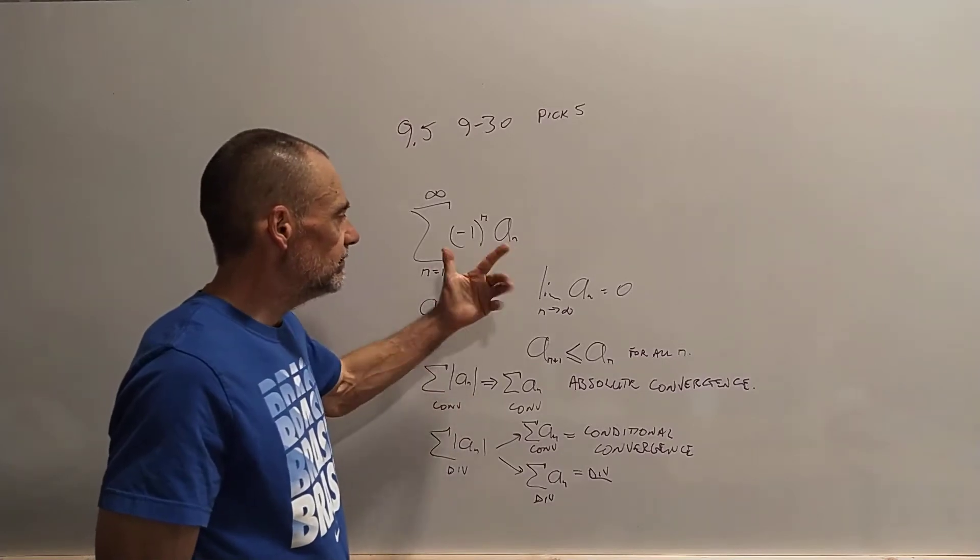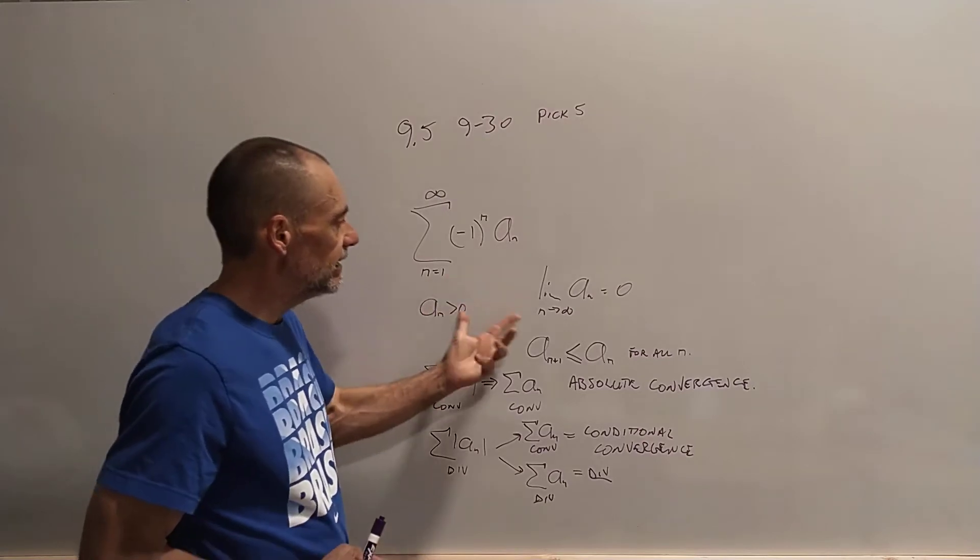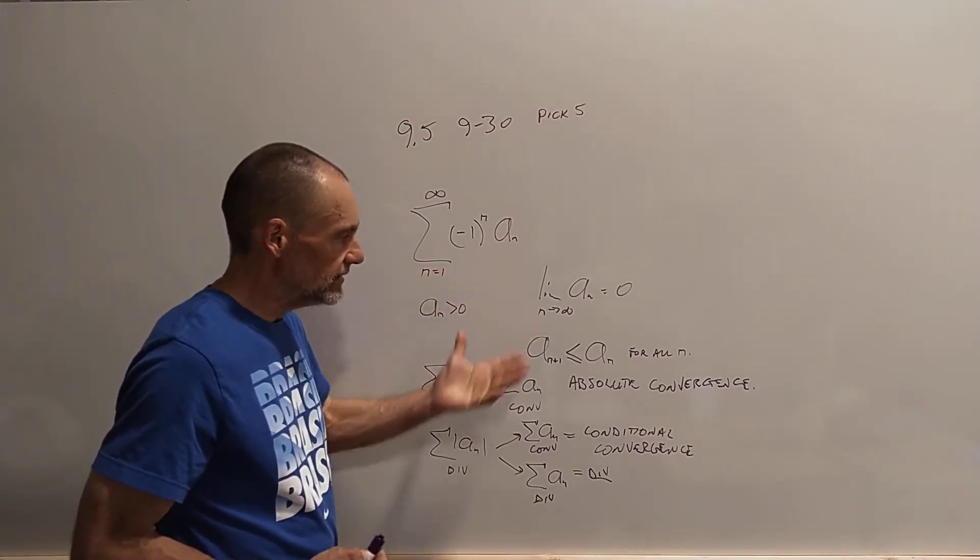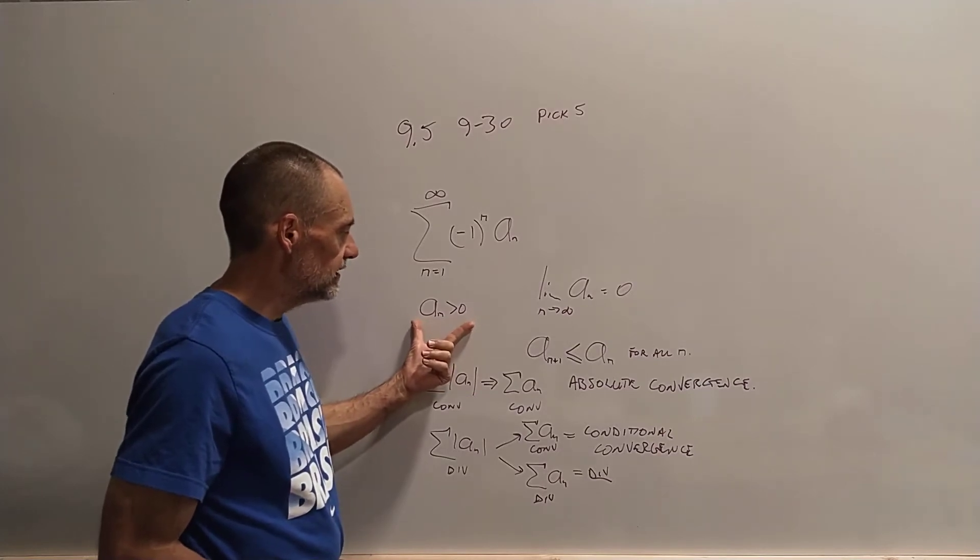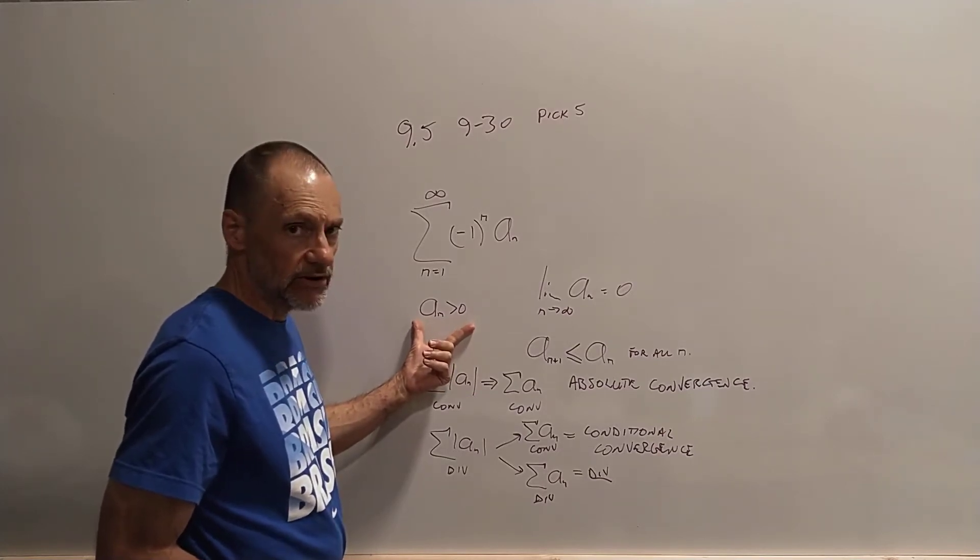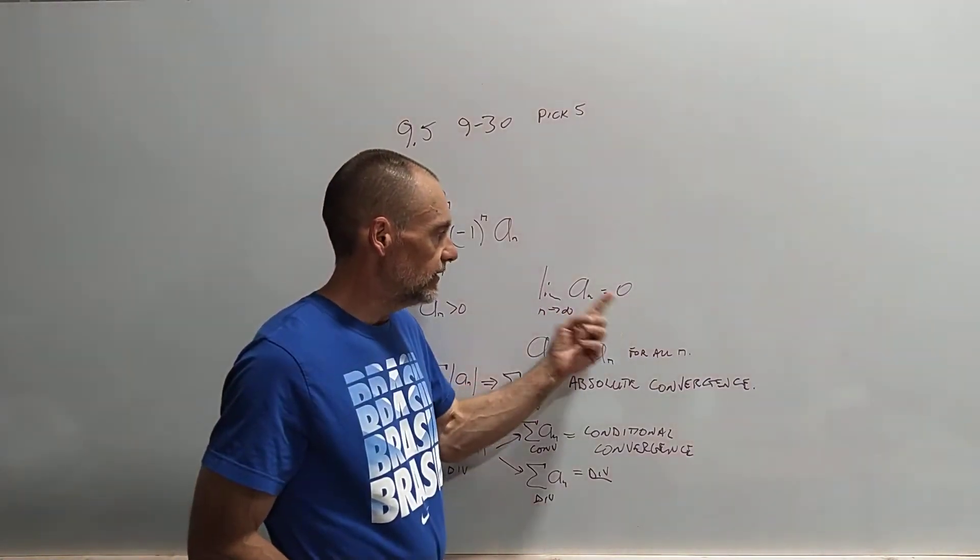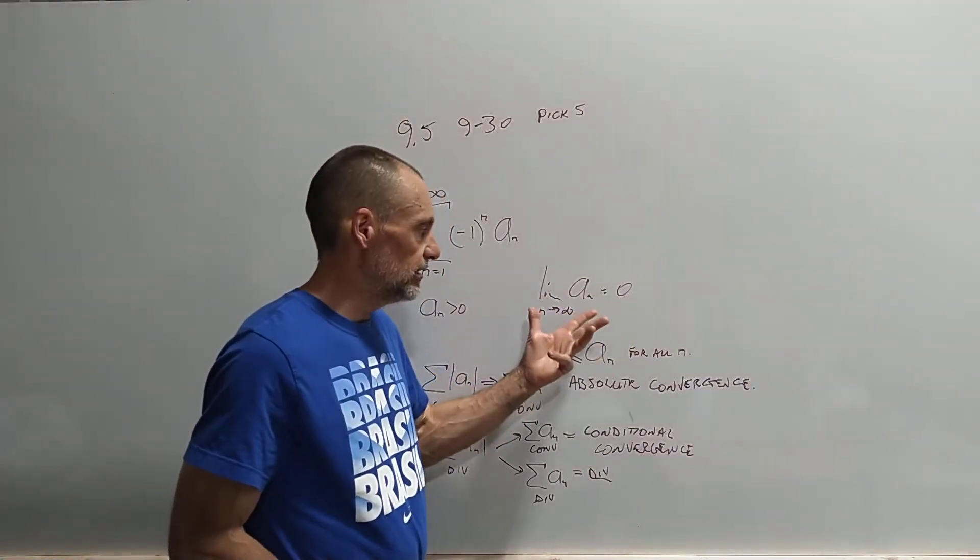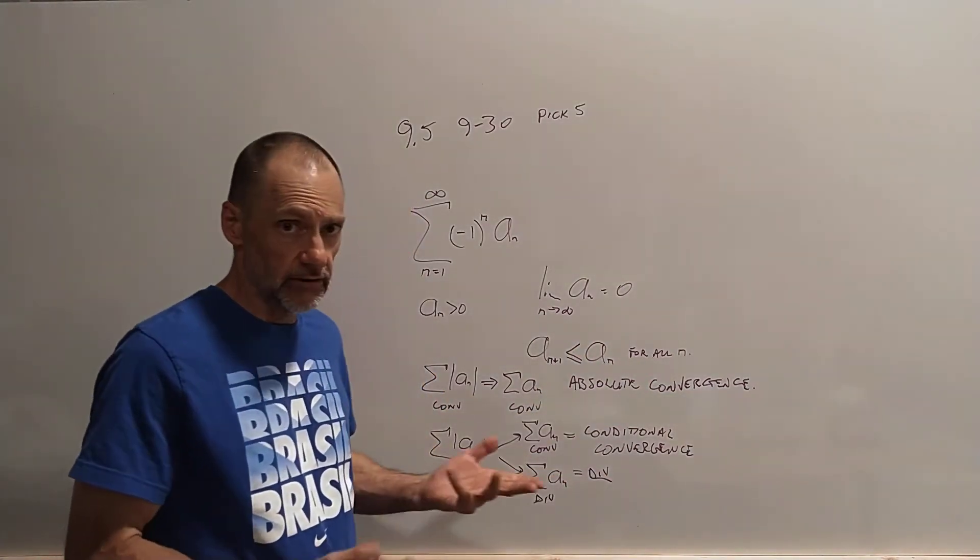Now, these can be difficult with some of the other tests. So one real nice thing about these alternating series is that there is a test specifically for them. So this is given that the terms of the sequence are positive. The limit has to be 0 in order for this thing to converge, which limit has to be 0 for any series in order for it to converge.